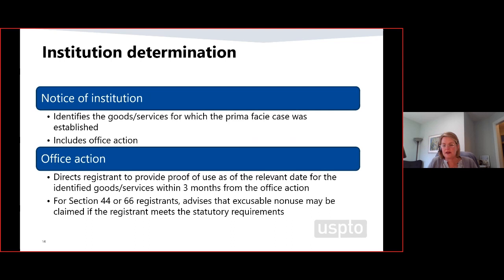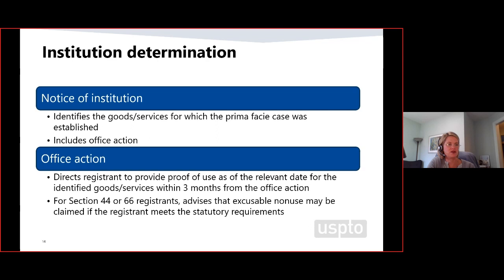Once we've reviewed the prima facie case and the reasonable investigation, we decide whether to institute proceedings or not. We will only institute on the goods and services for which a prima facie case has been made. If we institute, the registrant will get a notice of institution and an office action in one document. The notice will include the petitioner's evidence and request the registrant to rebut the prima facie case within three months; a one-month extension is available. We have not received any registrant responses yet, so I don't have lessons learned to share on that side.